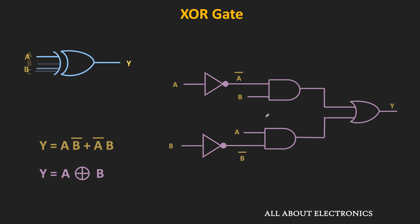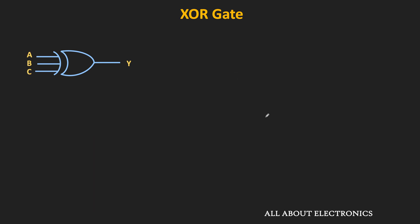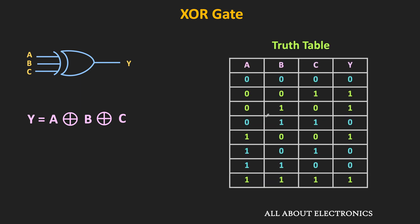Now let's see the three-input XOR gate. This is the symbol of the three-input XOR gate. If A, B, and C are the inputs, then the output Y can be represented as A XOR B XOR C. For three inputs, there are a total of eight different possibilities. The output of the three-input XOR gate is high or logic 1 when the number of 1s in the input are odd.